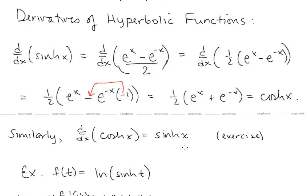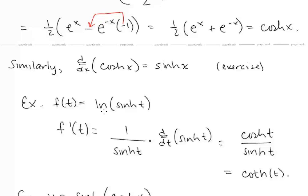Let's find the derivative of f(t) = ln(sinh(t)). This is a composition, so by the chain rule f′(t) = (1/sinh(t)) · cosh(t) = cosh(t)/sinh(t), which is the hyperbolic cotangent of t.